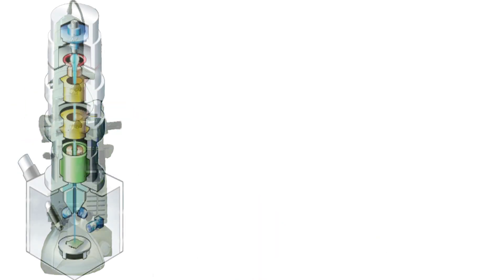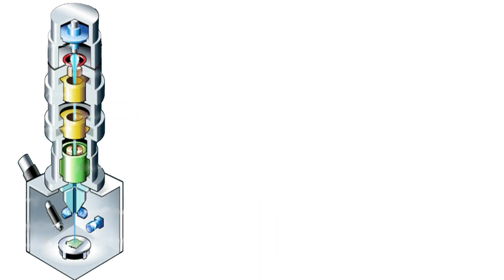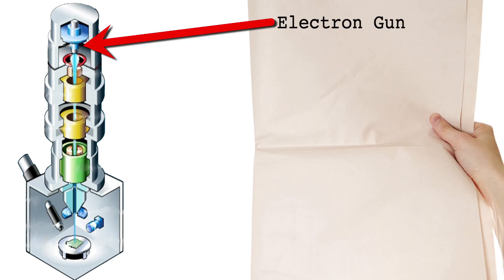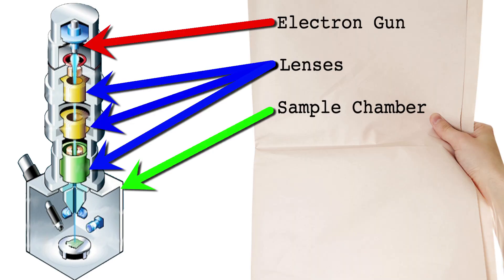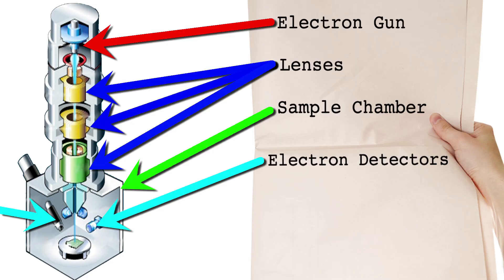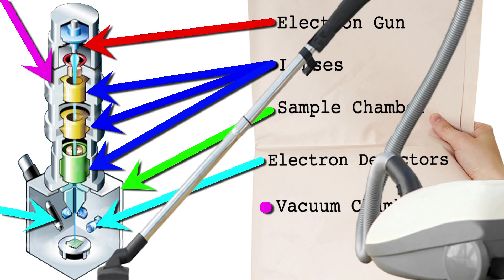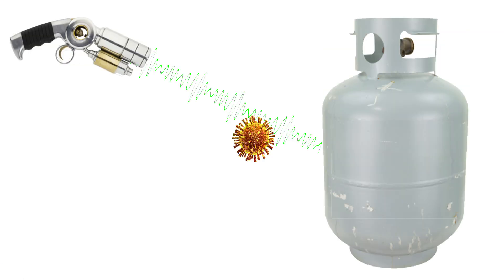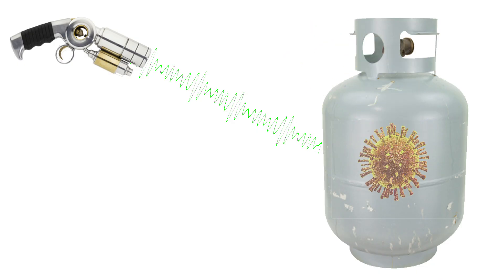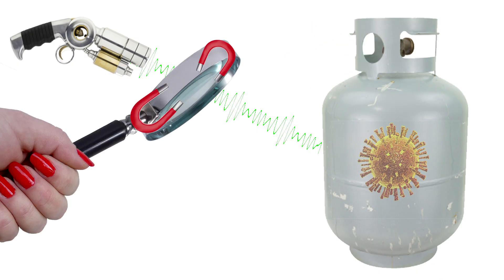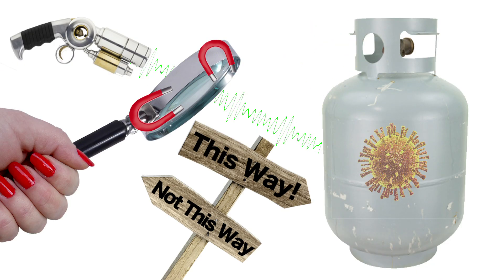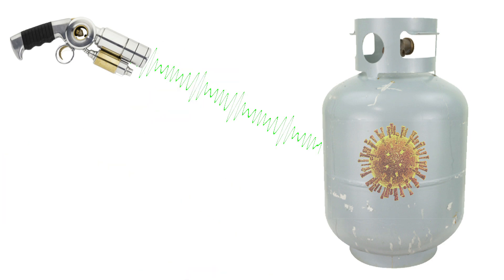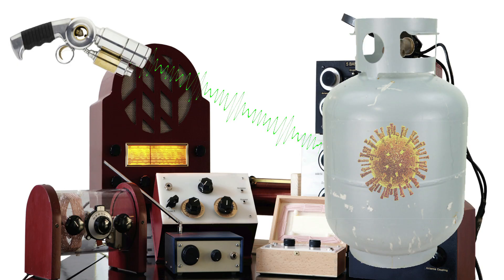An SEM has several key components: an electron gun, lenses, a sample chamber, electron detectors, and a vacuum chamber. The gun shoots a stream of electrons at the object in the sample chamber. The lenses are made of magnets, which control and focus the path of the beam. The vacuum chamber is necessary because otherwise the beam would encounter constant interference.